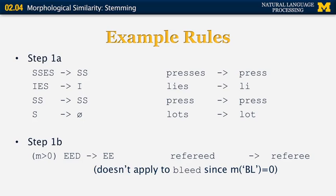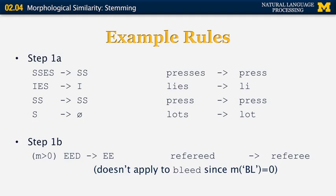Step 1B includes rules of this form: if the measure is greater than zero, perform a certain transformation. So 'refereed' changes to 'referee' because the measure of 'refer' is greater than zero. But this rule doesn't apply to 'bleed' because the measure of 'bl' is zero.